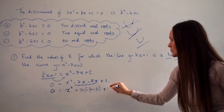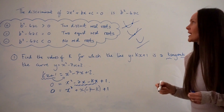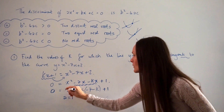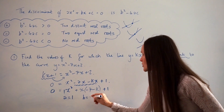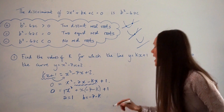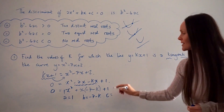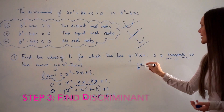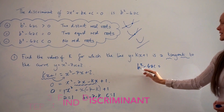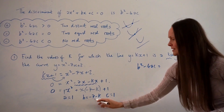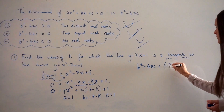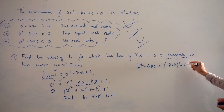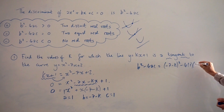So I've isolated the x to see more easily what my value of b, the coefficient of x, is going to be. Don't forget to write down plus 1. So my values are: a equals 1, because that's the coefficient of x squared; b equals negative 7 minus k; and c equals 1, the constant. Working out the discriminant, b squared minus 4ac, I substitute in: negative 7 minus k, all squared, minus 4 times 1 times 1.